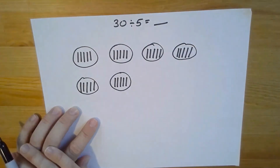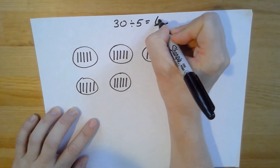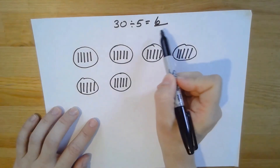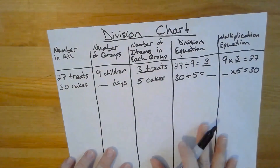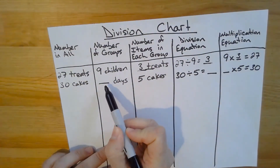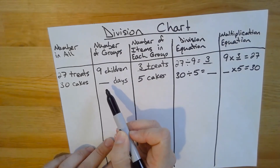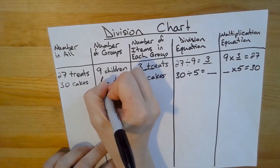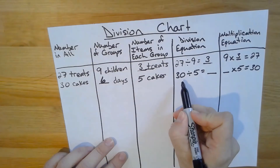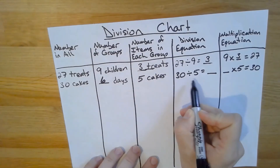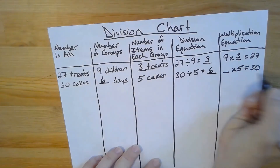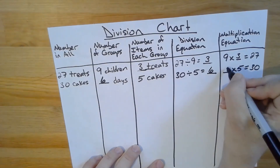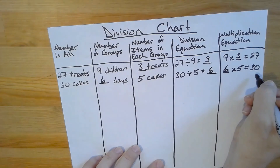So I have six groups. I can answer my division equation here, and again I can use this to fill out the blanks in my division chart. I just found that it took six days for the bakery to sell 30 cakes if they sold five cakes each day. I know this because I just figured out that 30 divided by five equals six, and that means that six times five equals 30.